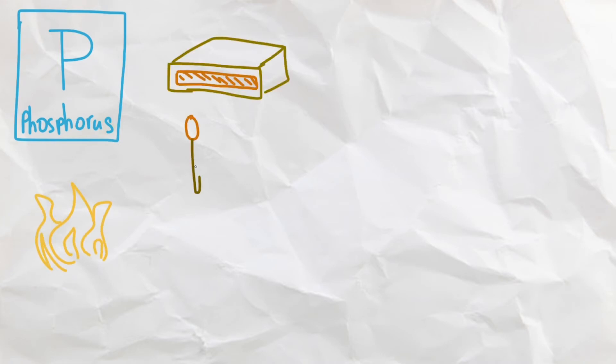Next, we have phosphorus, which is a non-metal that's flammable when exposed to air, which is why you see phosphorus strips alongside your matchboxes to light your matches.